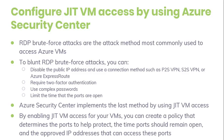This is not the most sophisticated form of attack but it is relatively simple to perform, and given enough time, it works. To guard against Remote Desktop Protocol brute-force attacks, you can apply multiple measures such as disabling the public IP address and using one of these connection methods: point-to-site VPN, site-to-site VPN, Azure ExpressRoute, requiring two-factor authentication, using complex passwords, and limiting the amount of time that the ports are open. Azure Security Center implements the last method by using just-in-time VM access, which allows you to have secure remote access to one or more virtual machines.